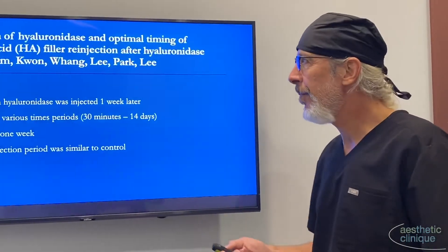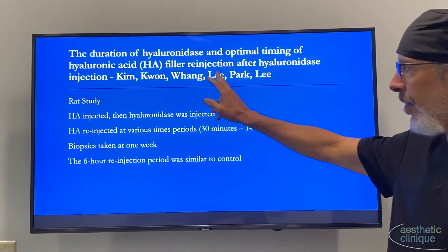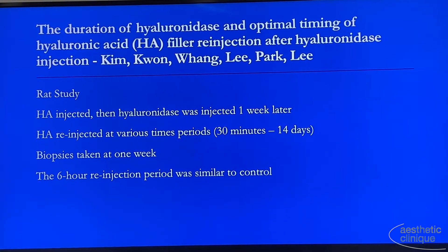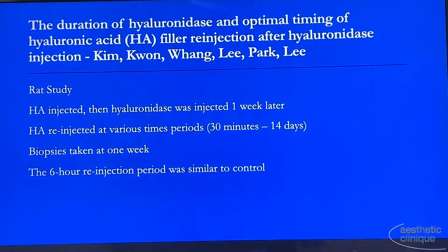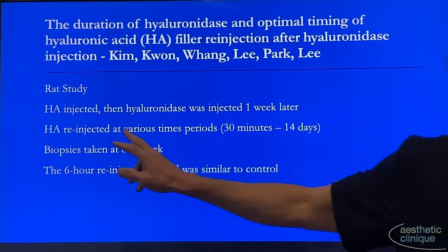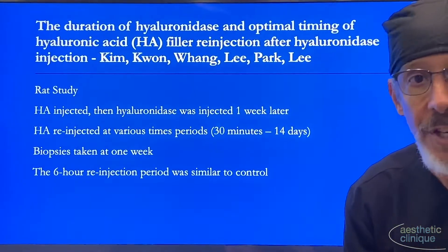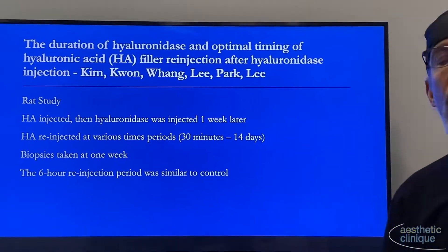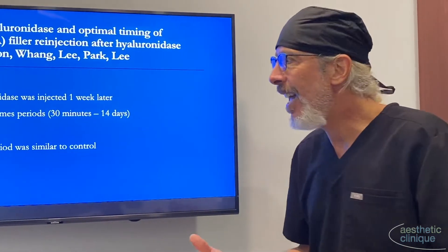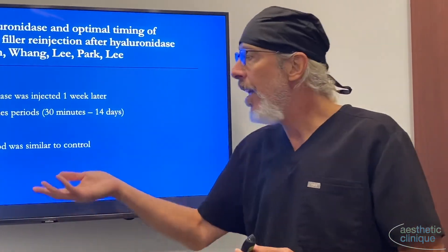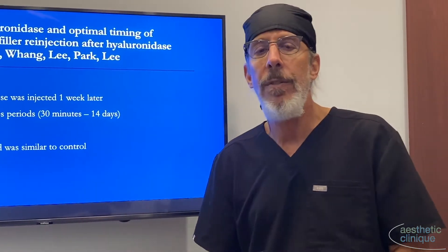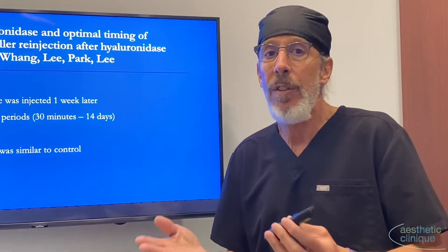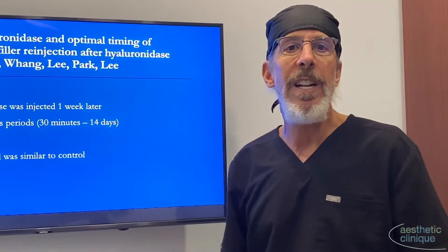This study done in Korea was a rat study. They injected HA, then injected hyaluronidase a week later, and re-injected HA at various time points from 30 minutes to 14 days. Biopsies were taken one week after that injection. They found that the 6-hour re-injection period was very similar to the control without hyaluronidase, suggesting that after 6 hours it's okay to re-inject HA filler. That's not what I do in my practice — I usually wait at least 2 or 3 days — but this study suggests you might be able to do it in 6 hours.